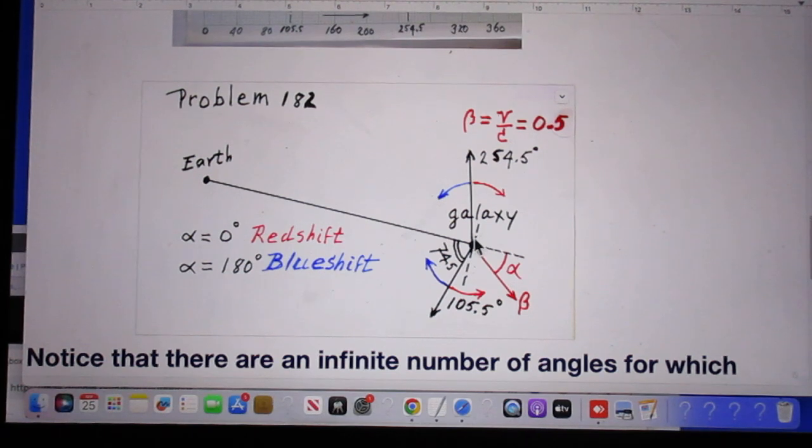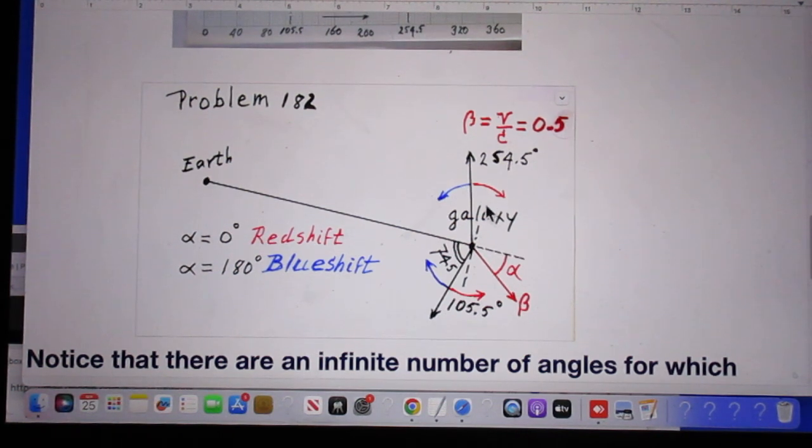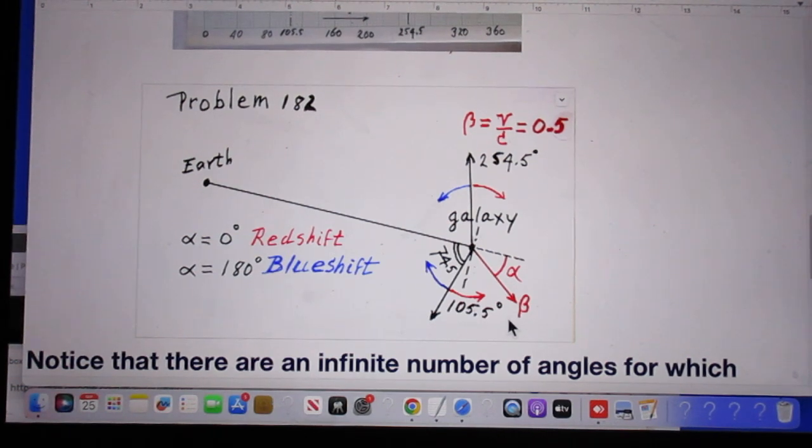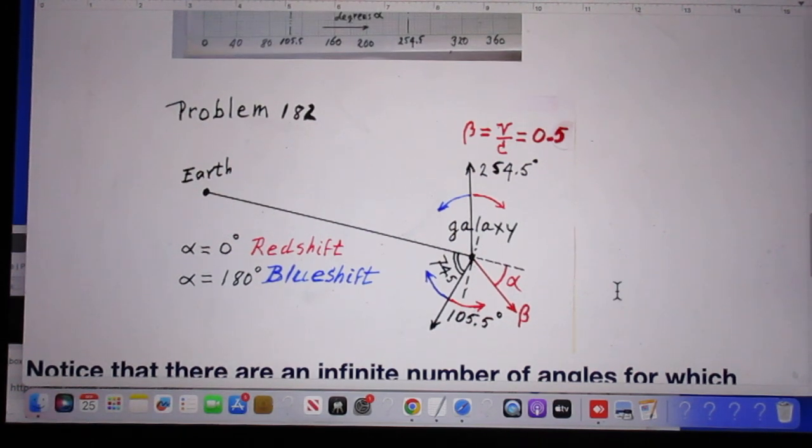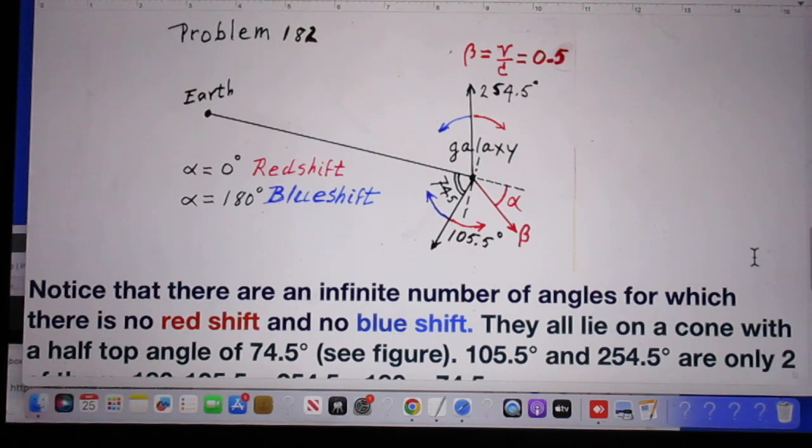However, when alpha is 254.5 degrees, so there is this angle, or when alpha is 105.5 degrees, which is this angle, then there is no redshift and there is no blueshift.